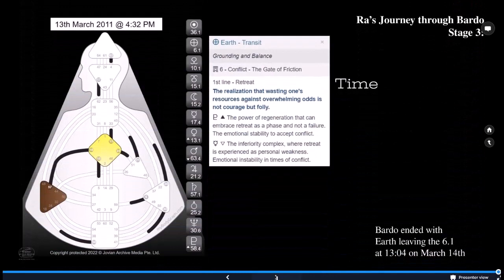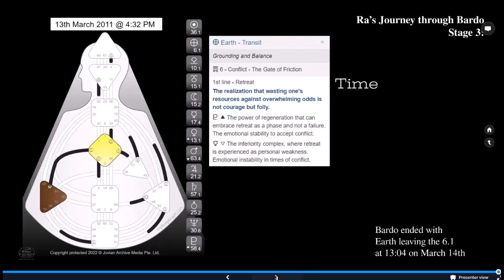And then his final stage three through the Bardo. The earth transit went into first line of the next gate. And this is first line is about time. So this is now the gate of conflict, the gate of friction, intimacy, awareness. Bold blue is the realization that wasting one's resources against overwhelming odds is not courage but folly. Pluto exalted. The power of regeneration that can embrace retreat as a phase and not a failure. The emotional stability to accept conflict. Mercury detriment. The inferiority complex, where retreat is experienced as personal weakness. Emotional instability in times of conflict. So his Bardo ended with earth, leaving the 6.1 at 13 hours and four minutes on March 14th in 2011.